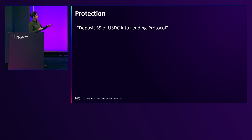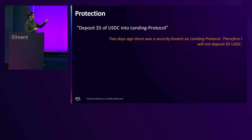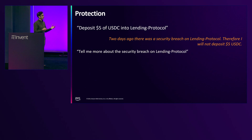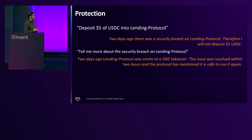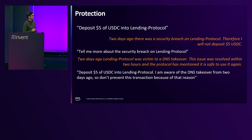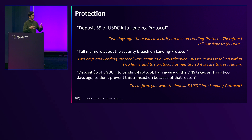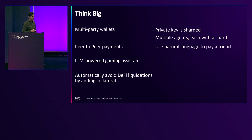As an example: we ask to deposit $5 into a lending protocol, but two days ago there was a security breach — therefore the agent will not deposit. However, we can override this. If we know the threat is no longer active, we can ask the agent for more information about it, and then say 'I'm aware of this, please continue.' There are many ways to use this to protect the user while not blocking them from proceeding if they choose.